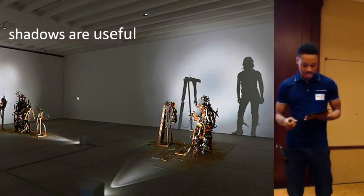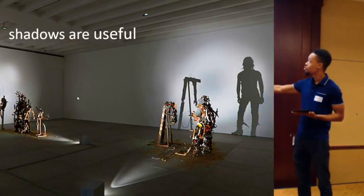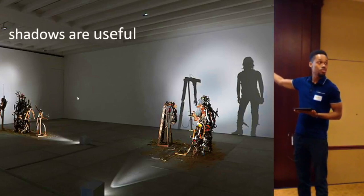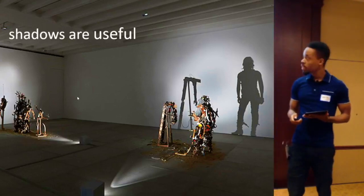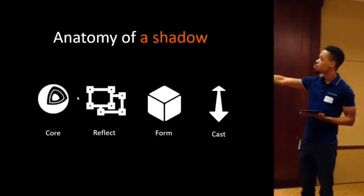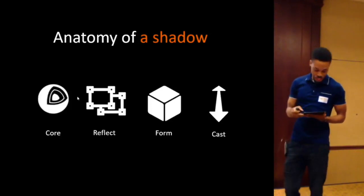And these things can be used to convey certain things. For example, this is an exhibit where the artist is using trash and garbage to make certain shadows of real figures. So shadows are important. And the way it does this is through the anatomy of the shadow. It's basically breaking down into cores, reflect, form, and a cast. These are the elements of what makes a shadow a shadow.